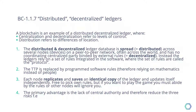A distributed ledger means that there are multiple entities recording the transactions. These entities — these versions of you — we often call nodes in the blockchain world. So there are multiple nodes recording and maintaining the ledger. To know what the current truth or current state is — who owns what — you just need to ask one of these nodes. Distribution means you make a copy of yourself and spread it across the room, or in the real world, spread it across the globe.